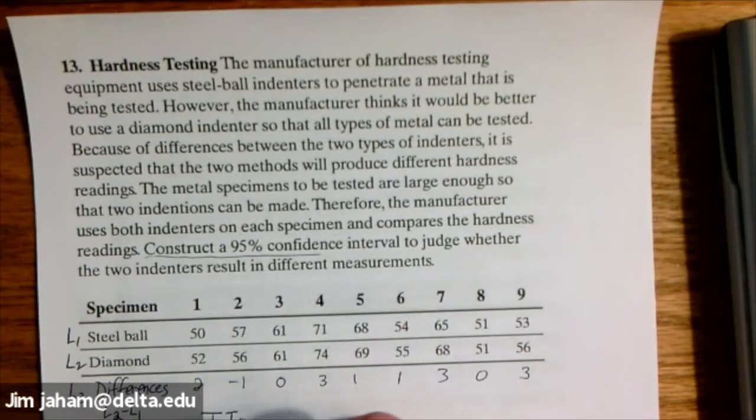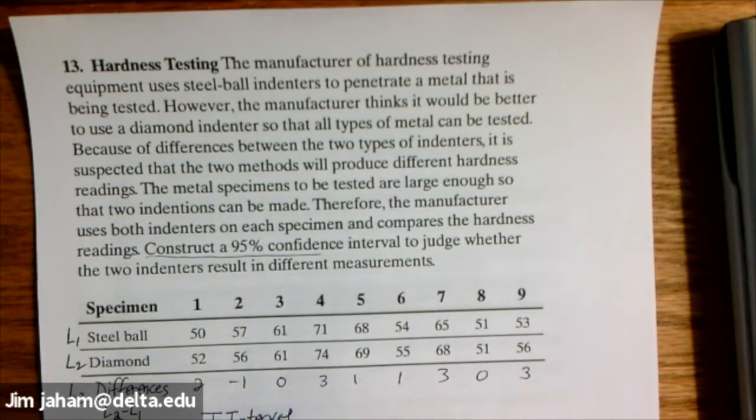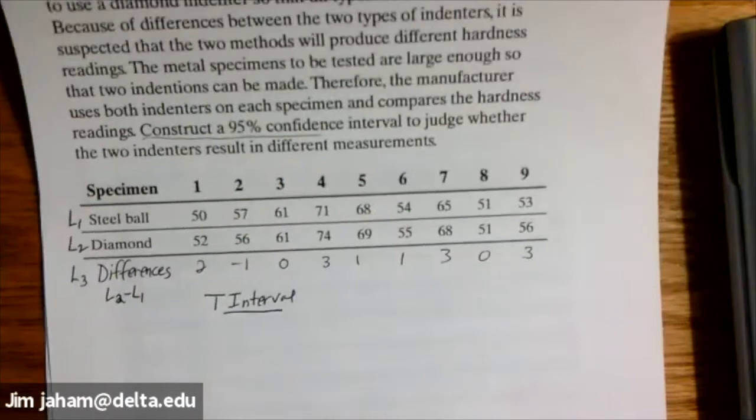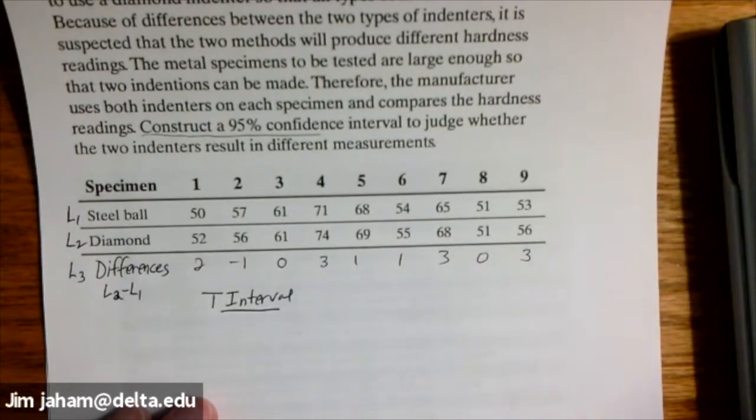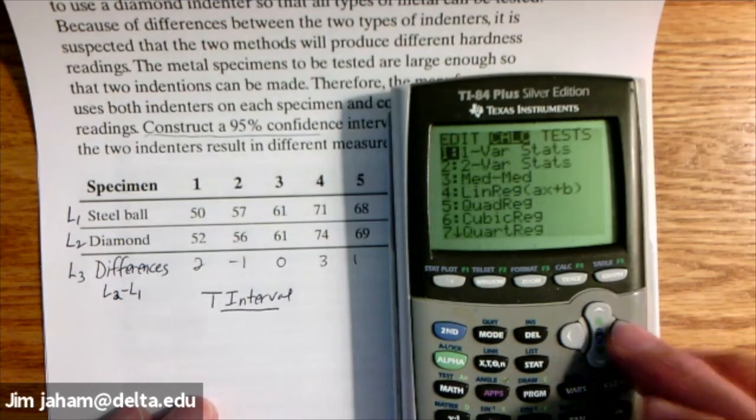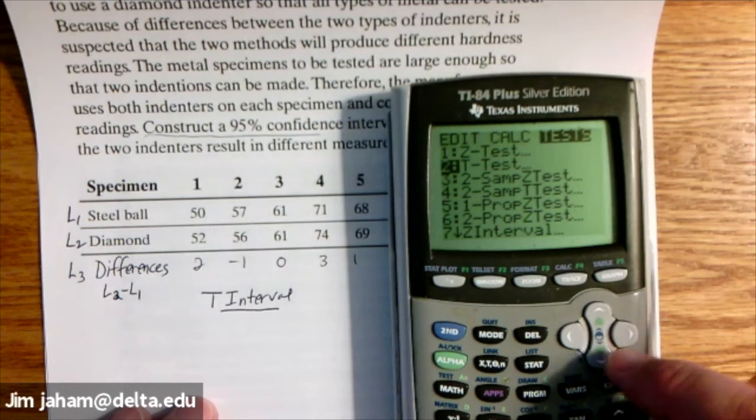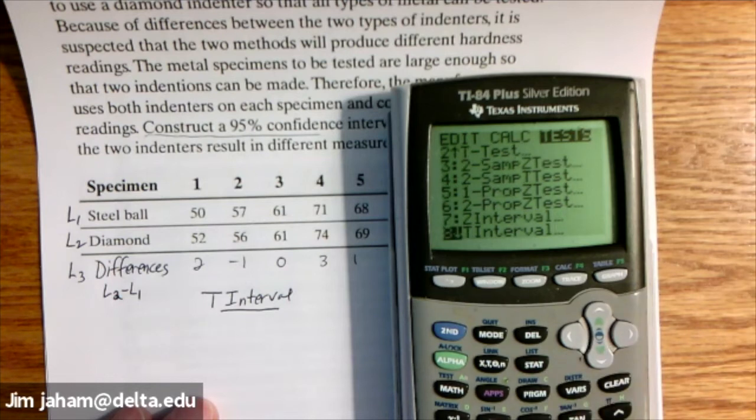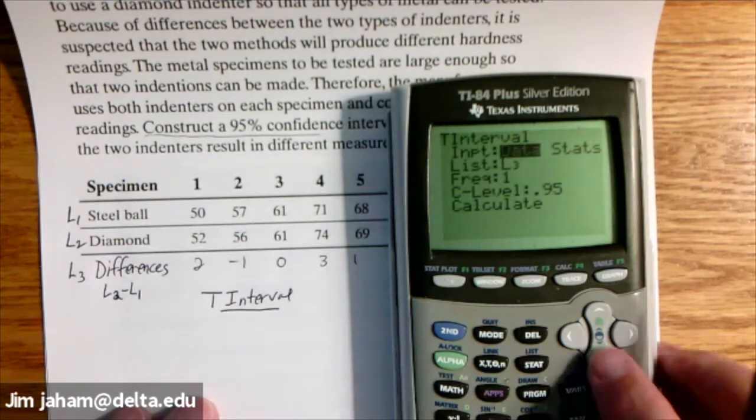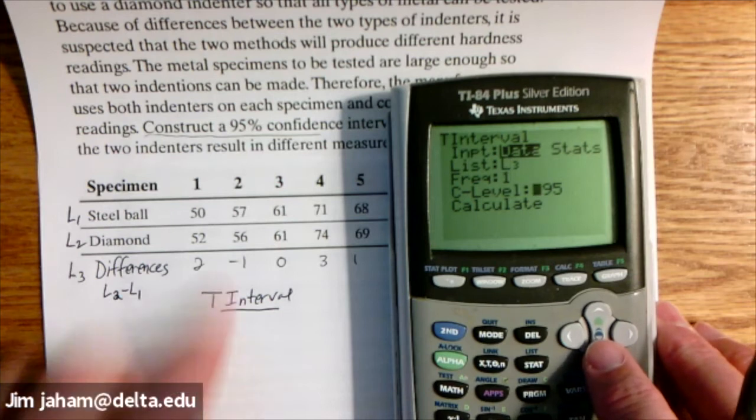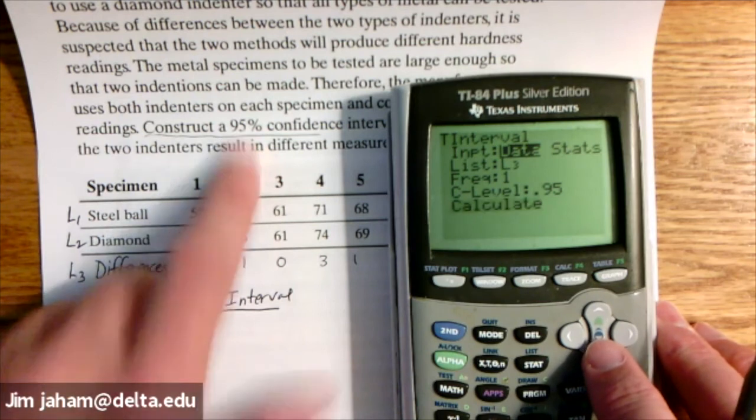So what we want here is T interval. That's how we calculate a confidence interval for a single set of data. So stat, and we're going to go to tests. Instead of T test, which is normally what we would do in the hypothesis testing situation, we're going to have a confidence interval piece in here as well. So we want to go down to T interval. We're going to select data again. L3 is our list again. Frequency one. And we still want the same C level. Turns out I didn't change anything here. And we're going to calculate.